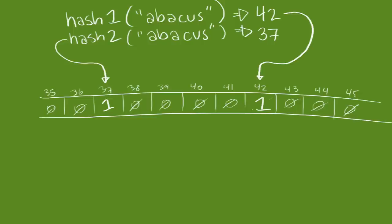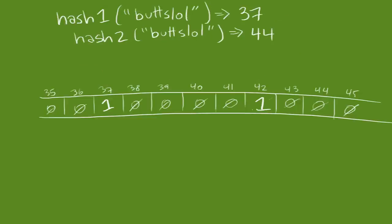Then, when we check to see if a word's in our filter, we run the same set of hash functions and check every location. If there's a zero in any of the locations, this word was never entered into the filter.